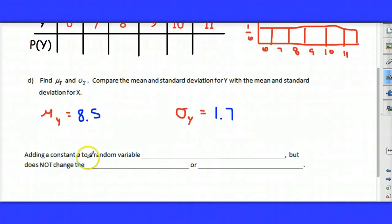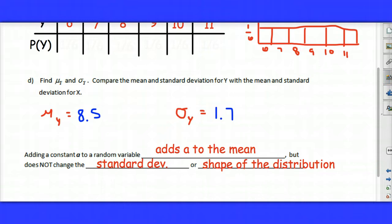So adding a constant a to a random variable adds a to the mean, but does not change the standard deviation or the shape of the distribution.